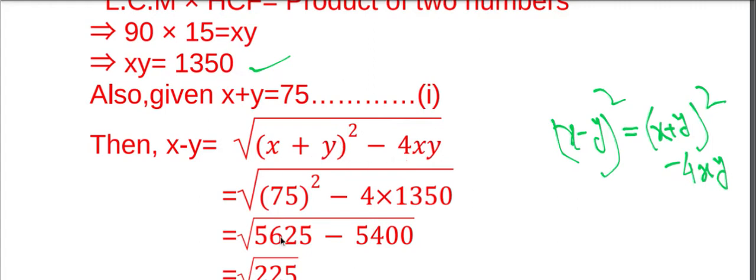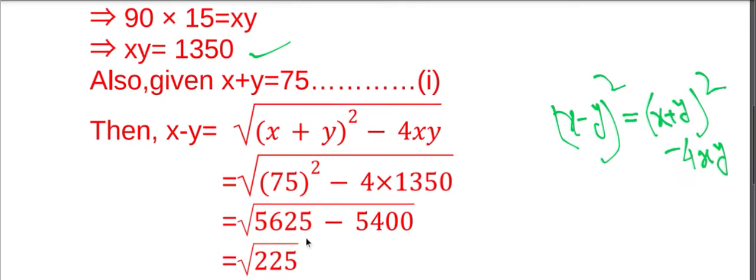We put the value of X plus Y, that is equal to 75, so 75 whole square minus 4 into XY, that is equal to 1350, equals 5400.